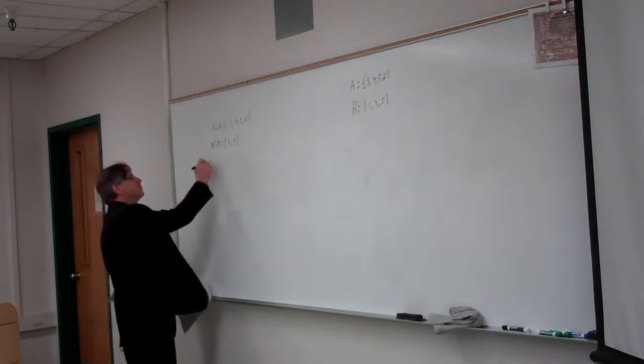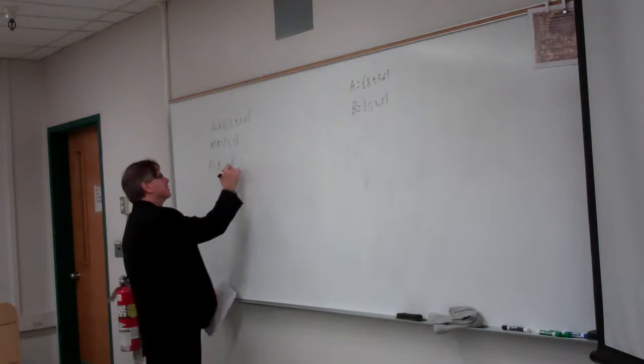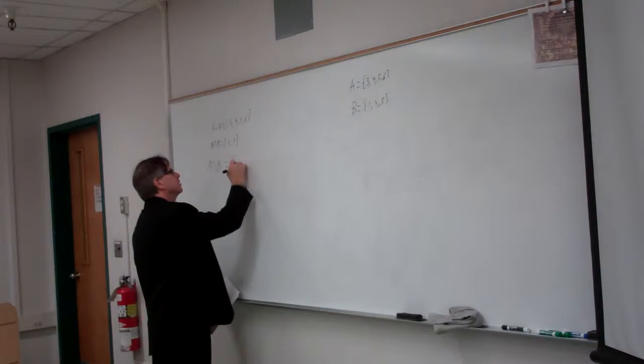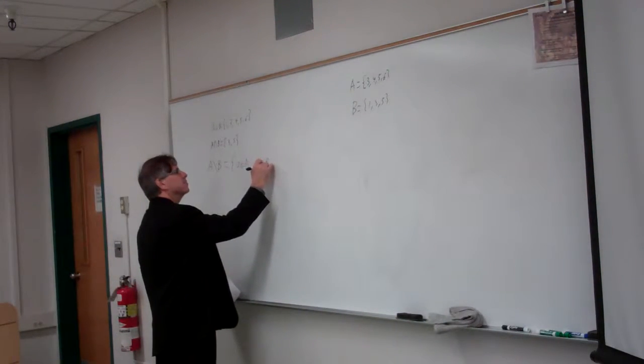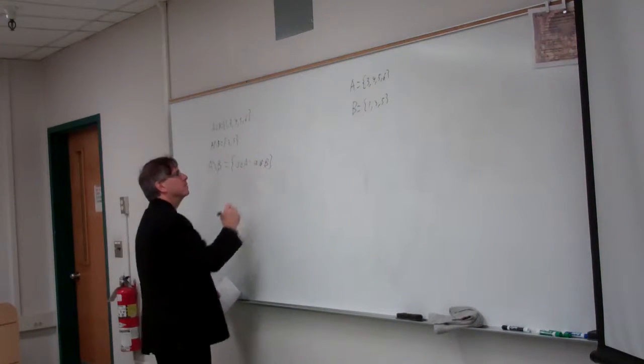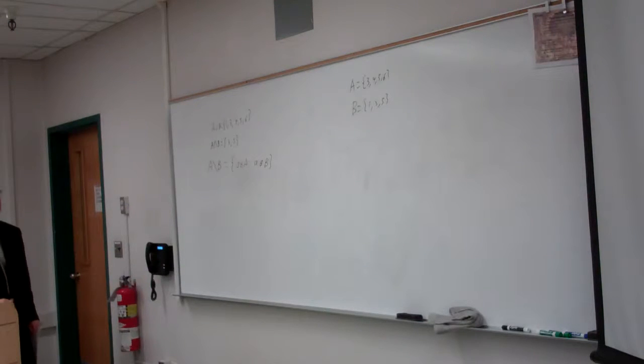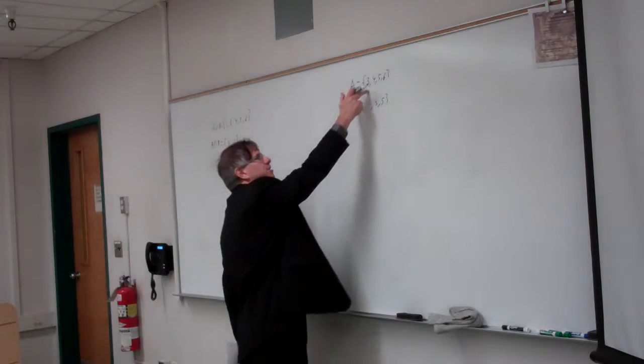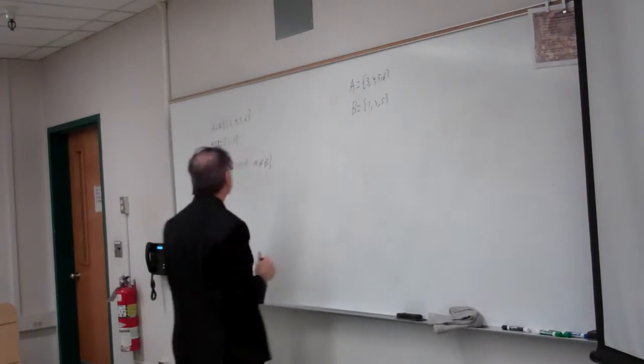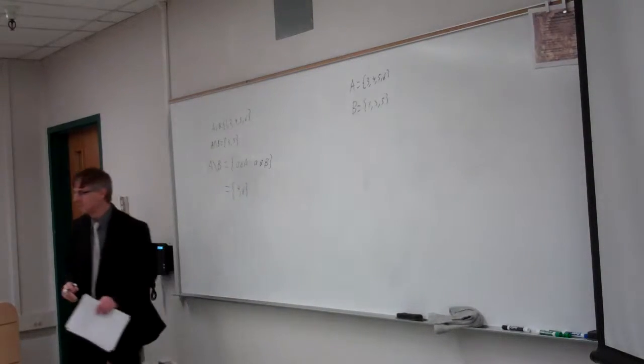And then the complement. This is the complement of B in A. It's the set of elements in A such that A is not in B. So anything in A that's not also in B. So it can't be 3 because that's in B. It could be a 4. It can't be a 5. It could be a 6. So it's the set of 4 comma 6.